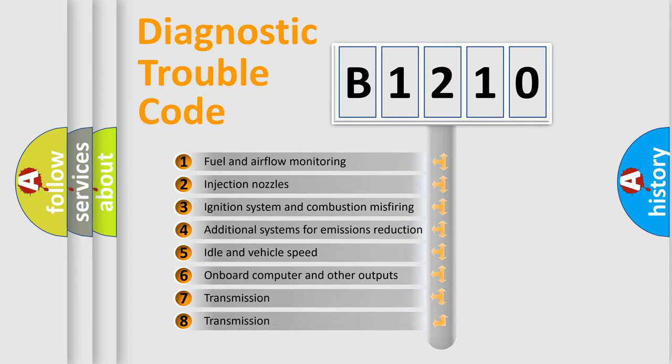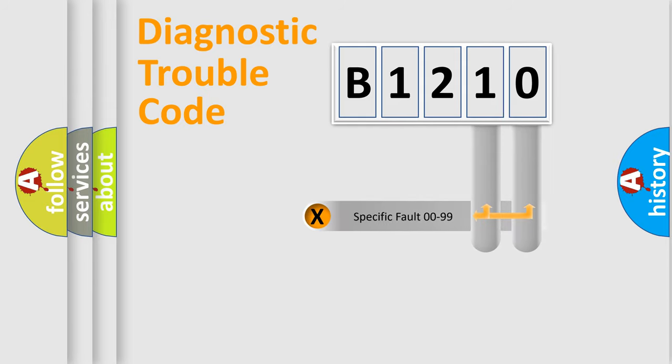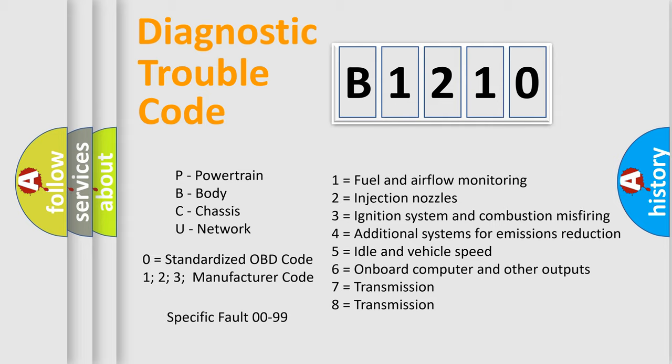The third character specifies a subset of errors. The distribution shown is valid only for the standardized DTC code. Only the last two characters define the specific fault of the group. Let's not forget that such a division is valid only if the second character code is expressed by the number zero.